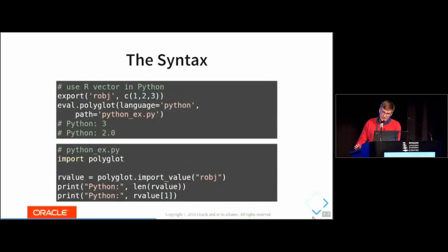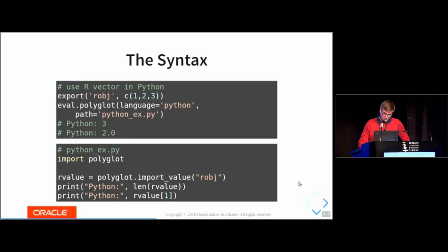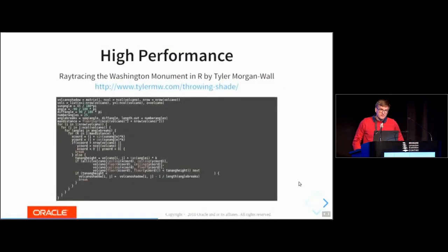Now a Python example. Aside from the eval.polyglot interface, there is also a mechanism where you can export objects from one language to a global namespace where other languages can import them. In this case the first code sample is R: we export an R vector (1, 2, 3) under the name 'r_option'. On the Python side we import it with polyglot.import_value — 'import' is a keyword in Python so it has to be import_value. This R_value variable in Python is still our R vector; it's not converted to a Python object — most Python functionality works with what we call foreign objects.